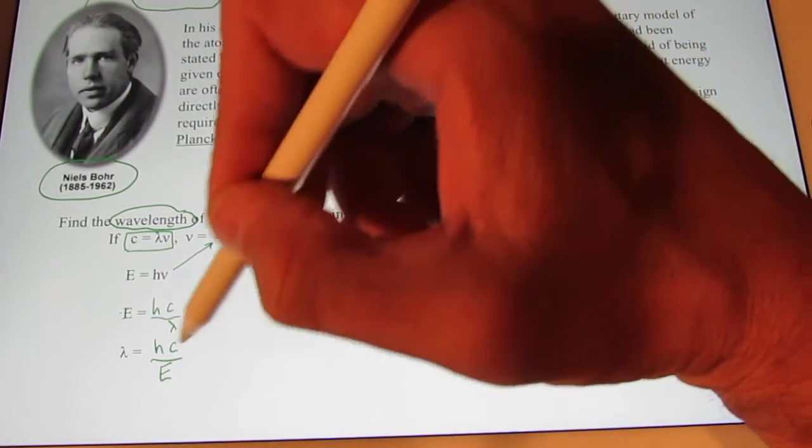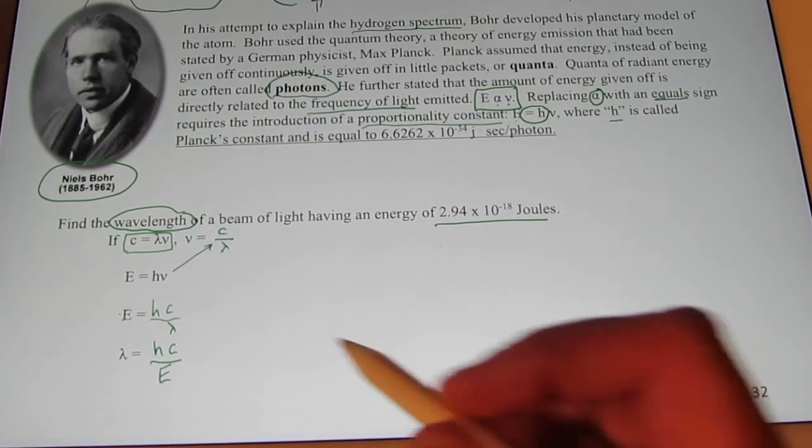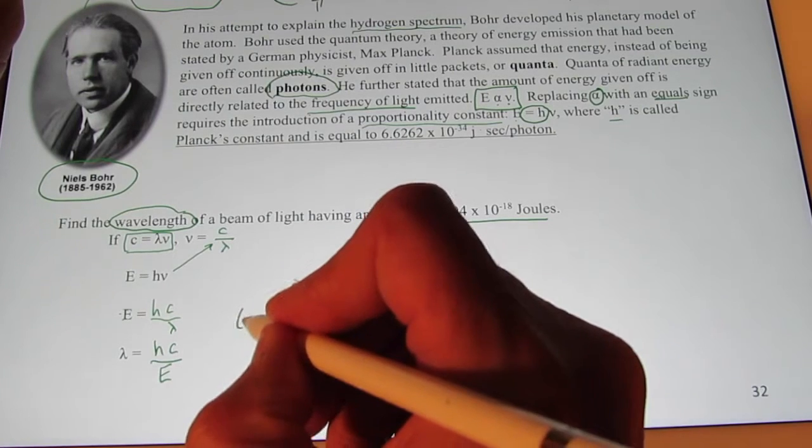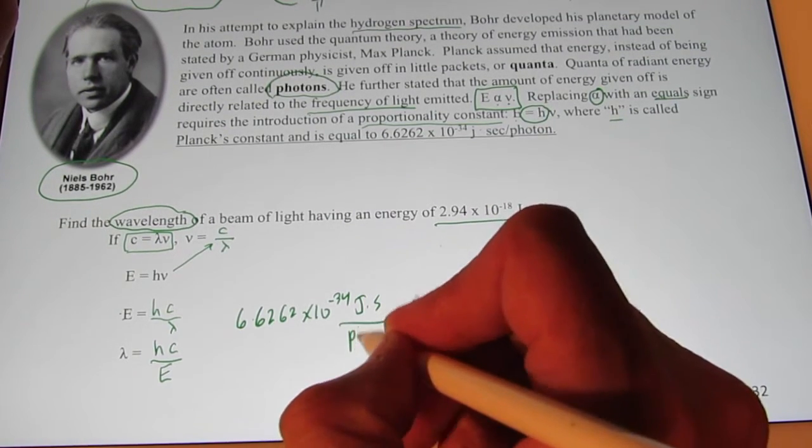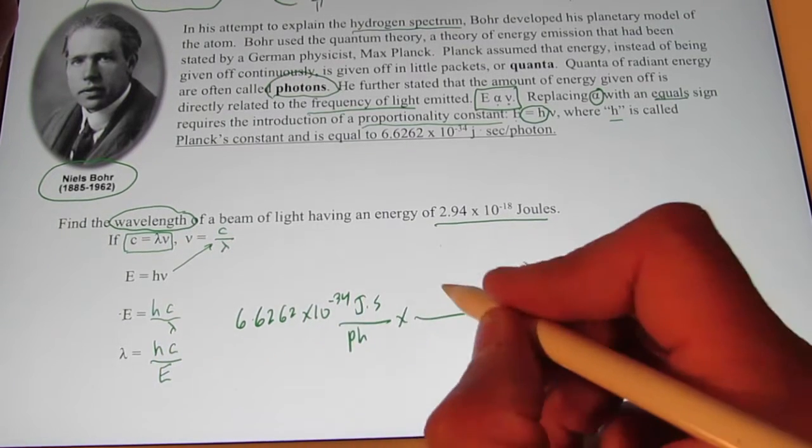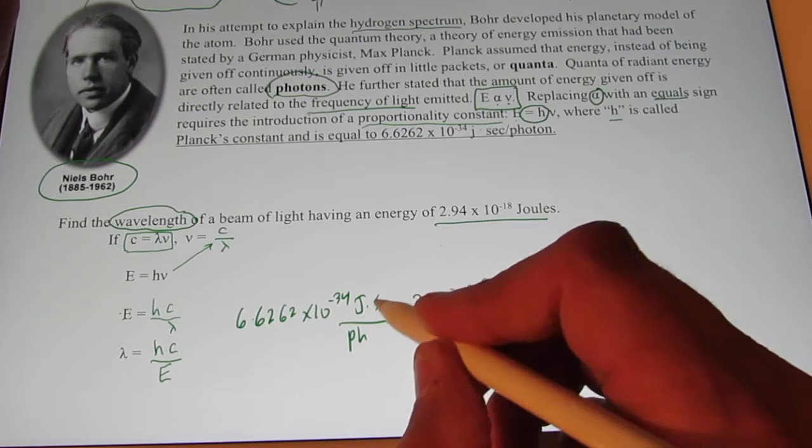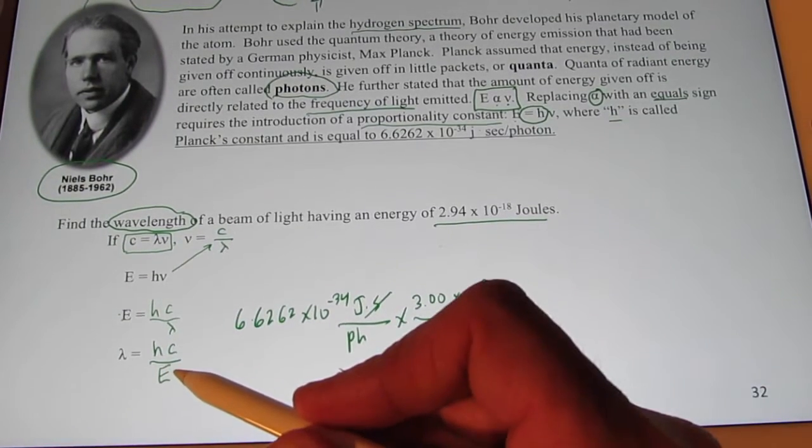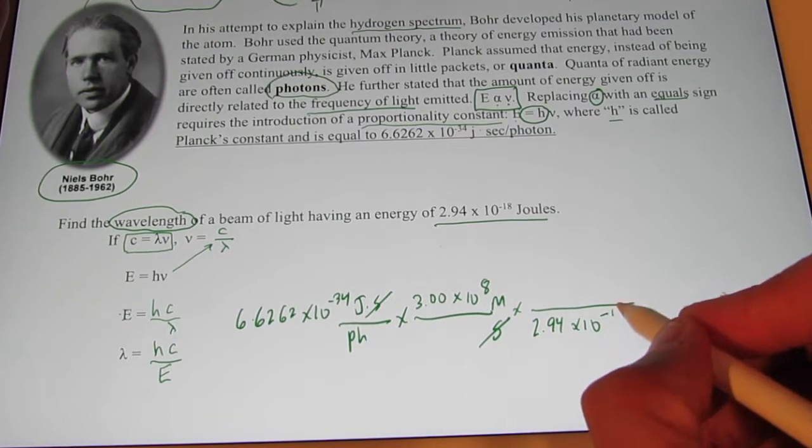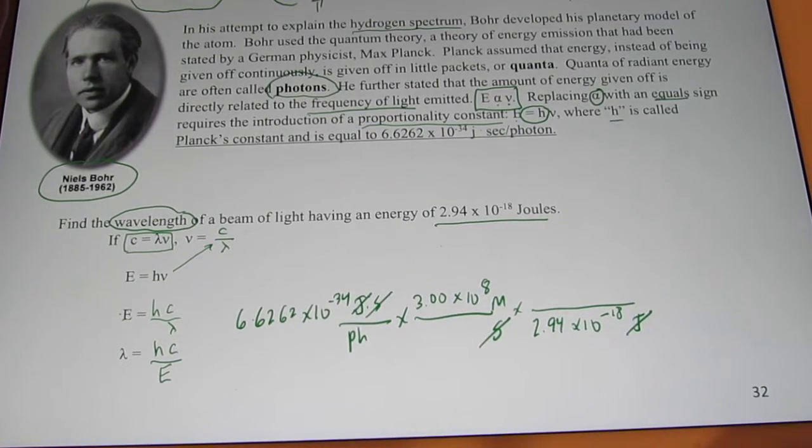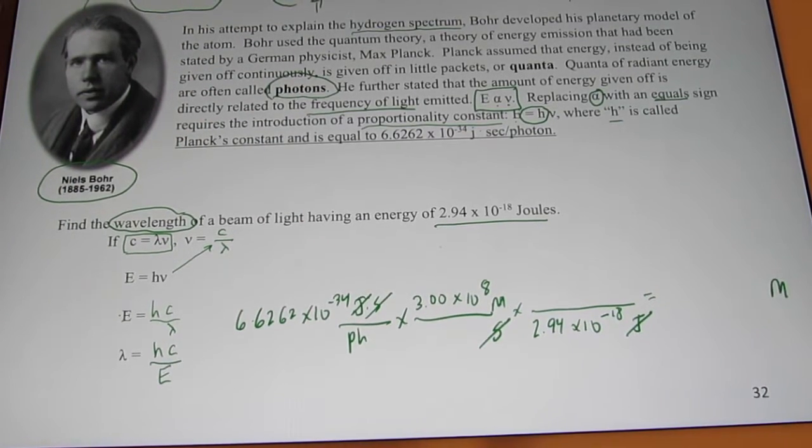So if I take Planck's constant, multiply it by the speed of light, and divide it by the energy of that beam of light, I should be able to find the wavelength of that beam of light in meters. Let's try it here. H is Planck's constant. 6.6262 times 10 to the negative 34th joule seconds per photon times C. H times C. C I'm going to give to you in three significant figures. 3.00 times 10 to the 8th meters per second. By the way, notice seconds have just divided out. Divided by the energy. The energy I gave you in the problem, which is 2.94 times 10 to the negative 18th joules. So notice joules have just divided out. So now I'm left with the wavelength in meters per photon of that light. Which is exactly what I want. I will have the wavelength in meters.